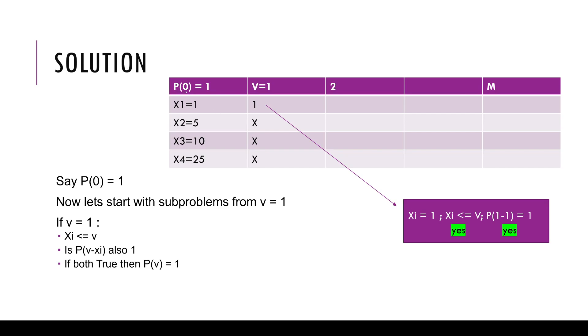Now the way we will solve this is that first there's the initial condition. The initial condition is that if P(0), which is if the value is 0, which means if I was to make 0 with a set of coins, I can always make it. That's the assumption and it's a reasonable assumption. So we make P(0) equals 1.